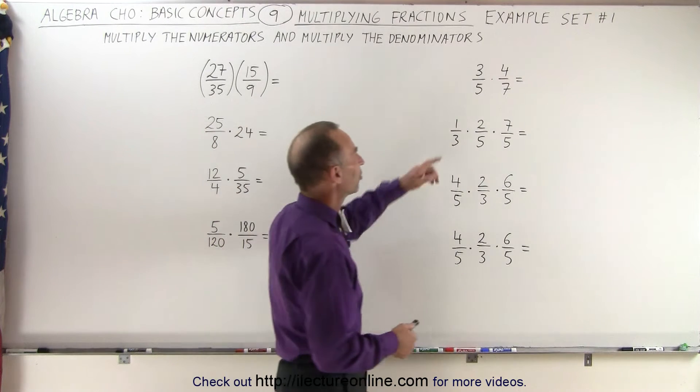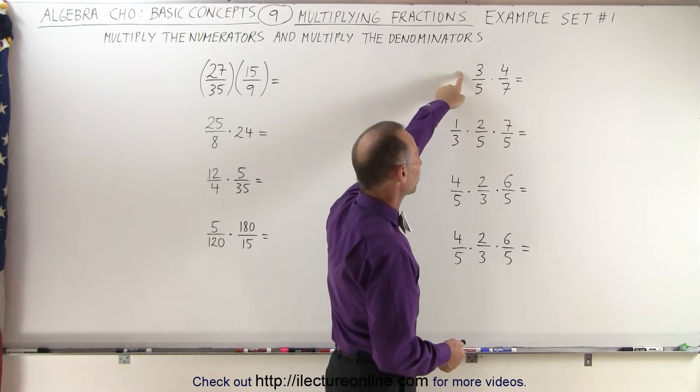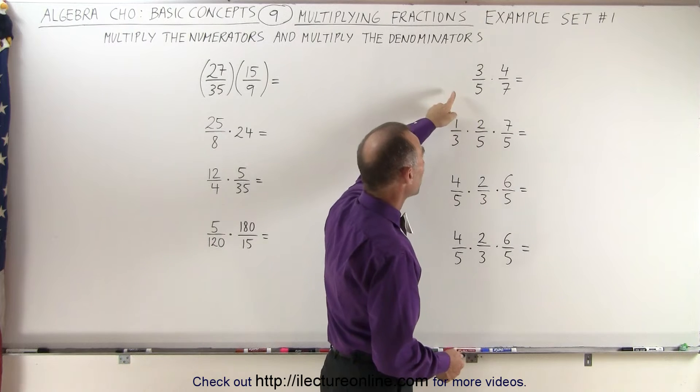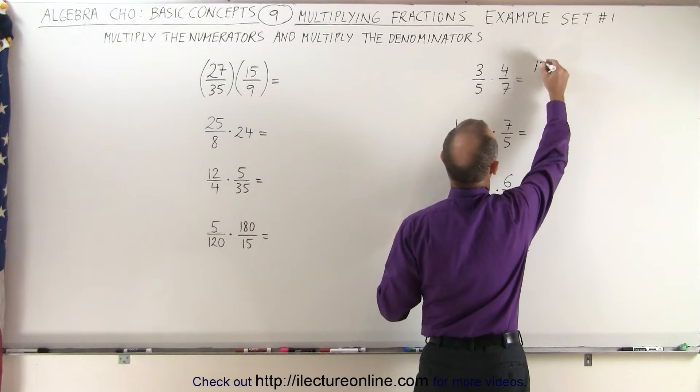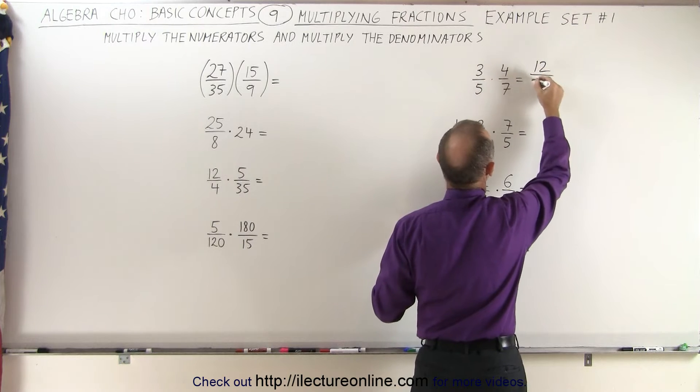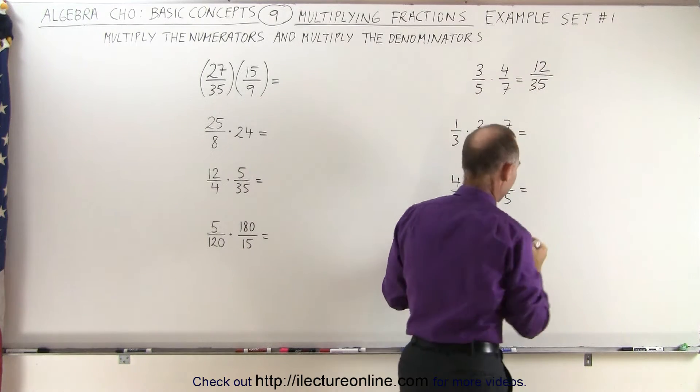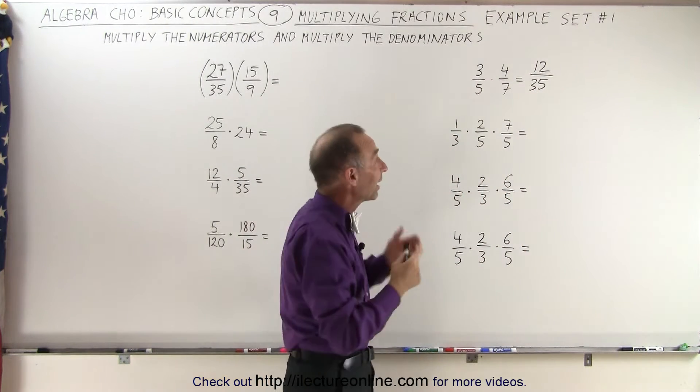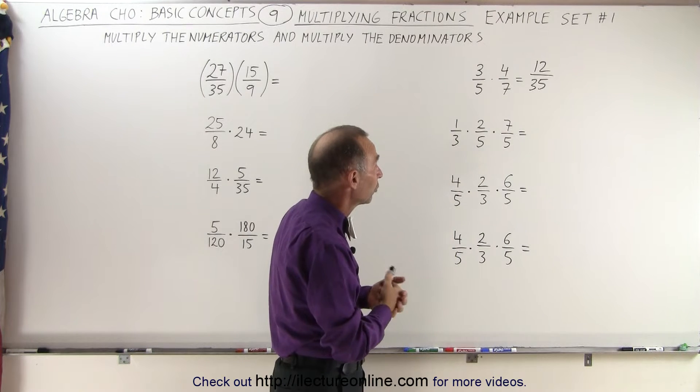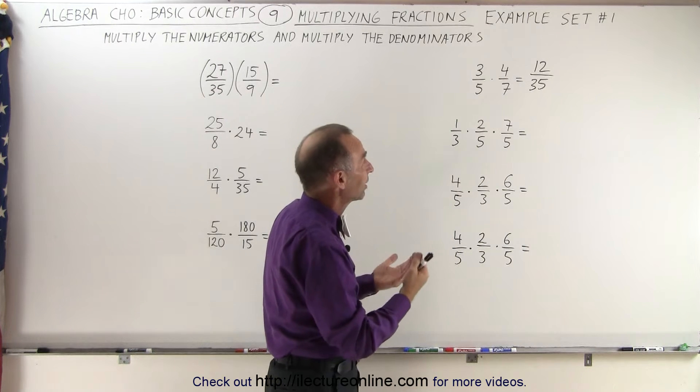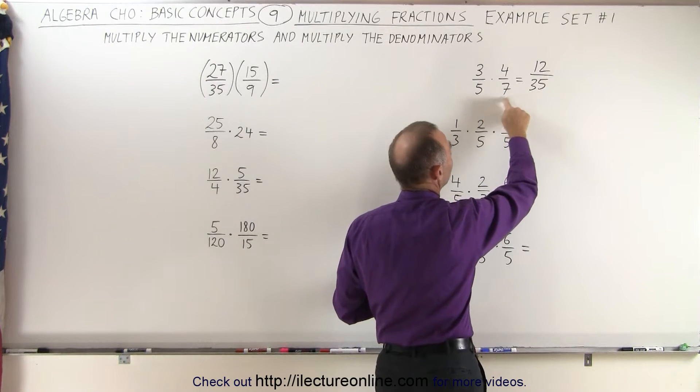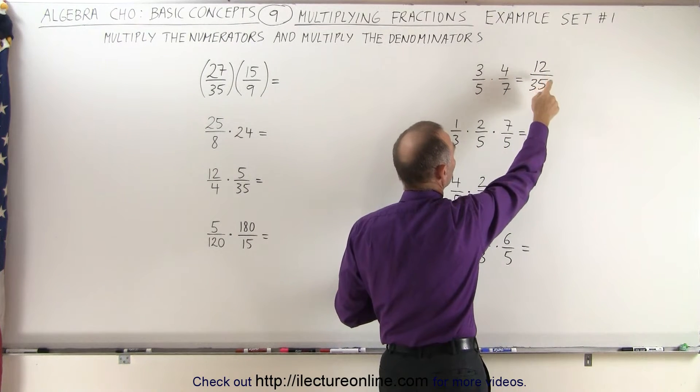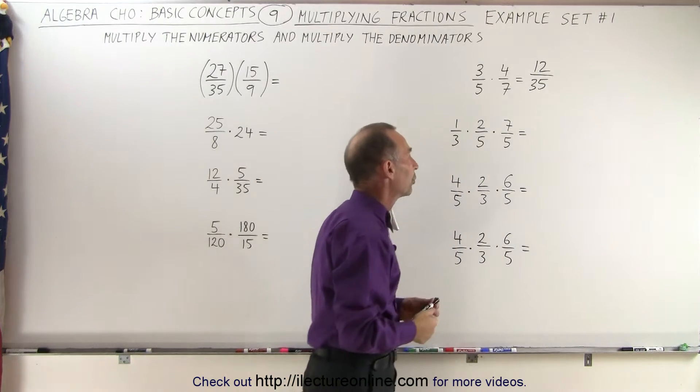On the first one it's fairly straightforward. We must multiply the numerators together and then multiply the denominators together. So 3 times 4 equals 12 and 5 times 7 equals 35. Then we try to see if we can simplify that answer, reduce it to lower terms, but in this case that's not possible because 35 is only divisible by 5 and 7, and 12 is only divisible by 2 and 3. So we cannot reduce that anymore.